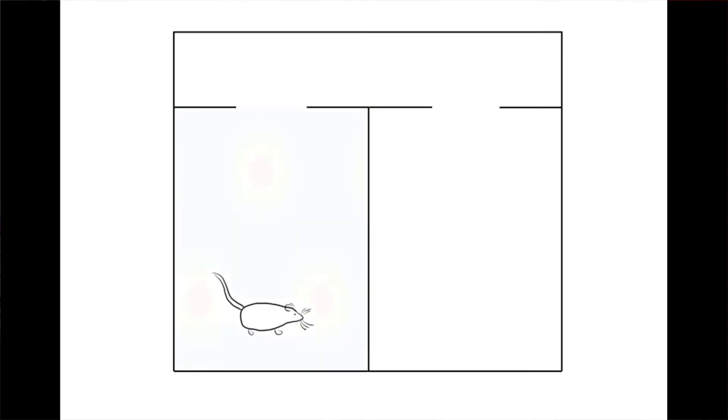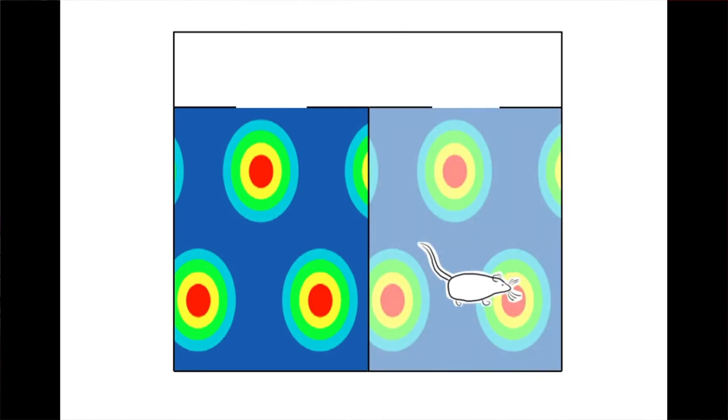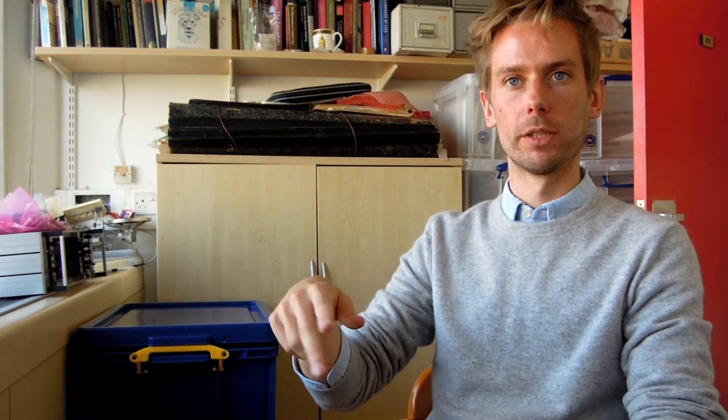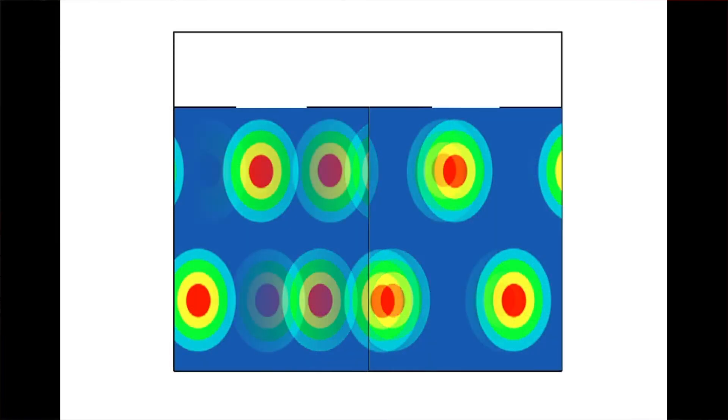What we found was that at the beginning of the experiments, the grid cells had the same firing pattern in both, but as the rat gets more experienced with the environment, it runs around between the boxes more often. The pattern forms a single continuous and global pattern that spans the two boxes.